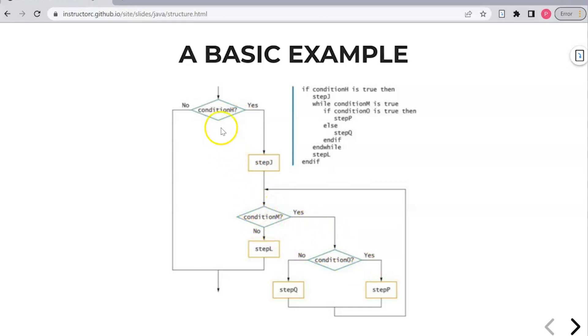You see the single alternative, you see the sequence with step J, you see the looping structure, you see the dual alternative selection structure. But then also you'll see that these structures are nested within each other. Within the single alternative condition H, you have the condition M structure that's nested within this overall condition H structure or single alternative structure.